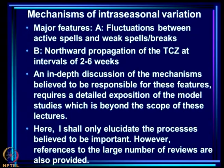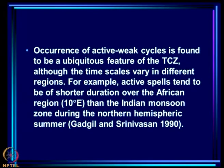An in-depth discussion of the mechanisms requires detailed exposition of model studies, which is beyond the scope of these lectures. Here, only the processes believed to be important will be elucidated, with references to review papers provided for those who wish to go further. Occurrence of active-weak cycles is found to be a ubiquitous feature of the TCG, although the time scales vary in different regions — that is, over all monsoonal regions of the world where TCG occurs it fluctuates, but the periods of active and weak spells vary from place to place.